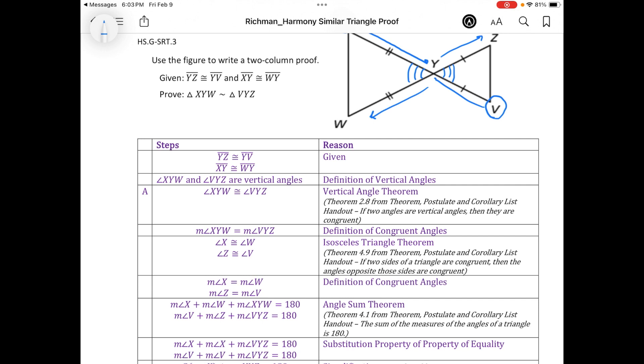So because of that, I knew that the angles opposite those sides were going to be congruent to each other as well. So I knew that angle W is congruent to angle X, and then similarly, I knew that angle V is congruent to angle Z. And because of the definition of congruent angles, I knew that their measures were equivalent.